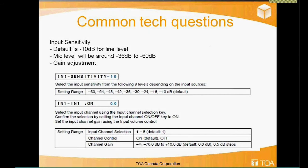To change the sensitivity, either go into the software and bring it down to minus 48 or minus 60, or use the front panel by pressing the input, pressing the down arrow until you see input sensitivity, and turning the parameter knob. Microphones typically range from minus 36 to minus 60 dB, so always check the manufacturer's spec sheet for the sensitivity rating. You don't want to overdrive the input and get a distorted sound on the output.